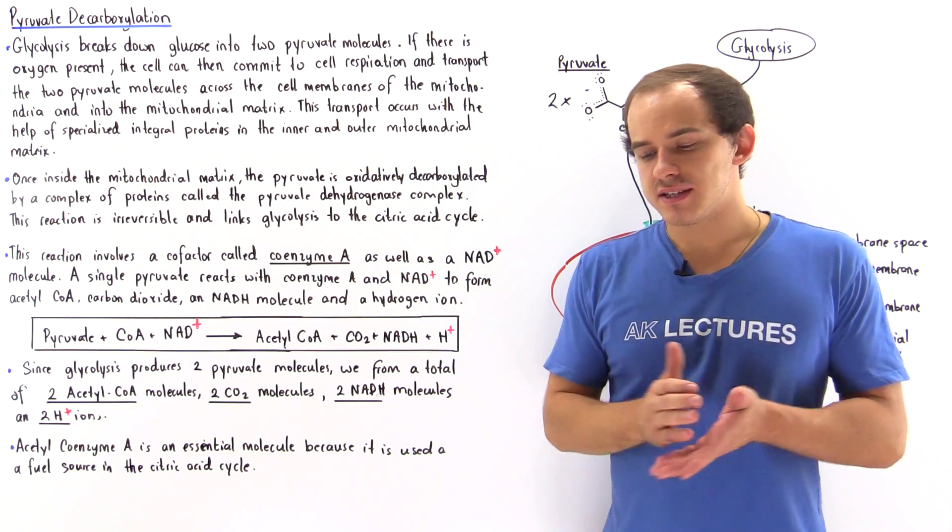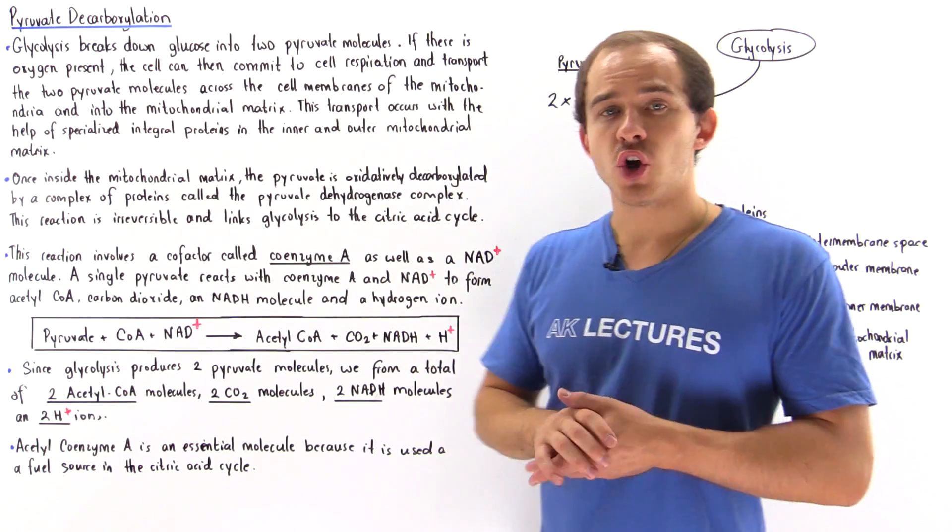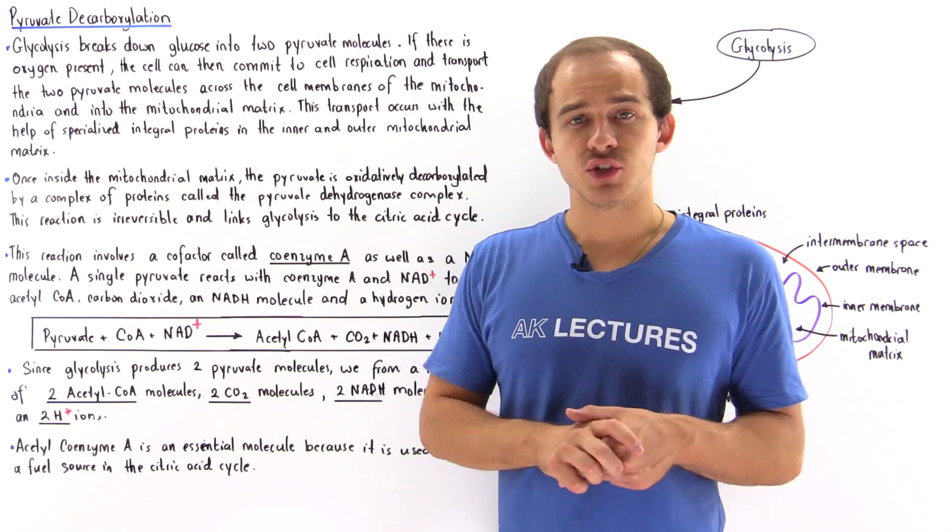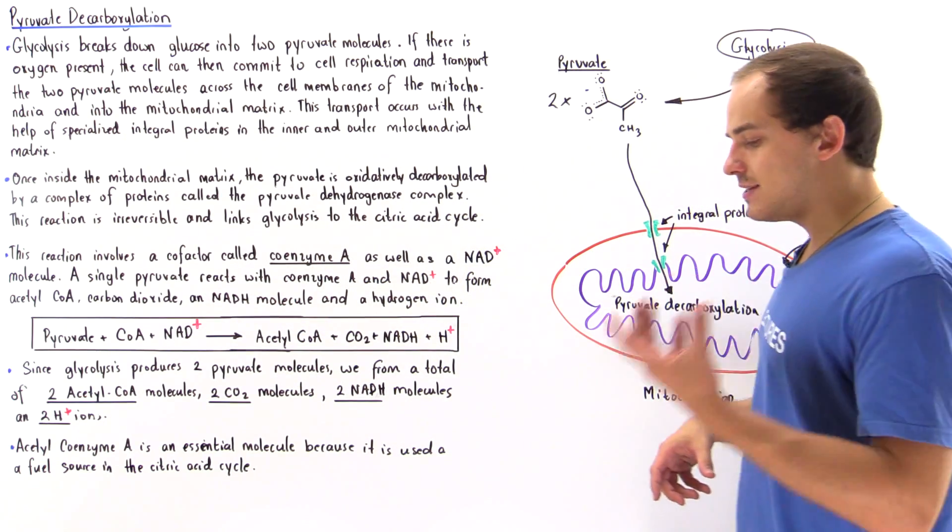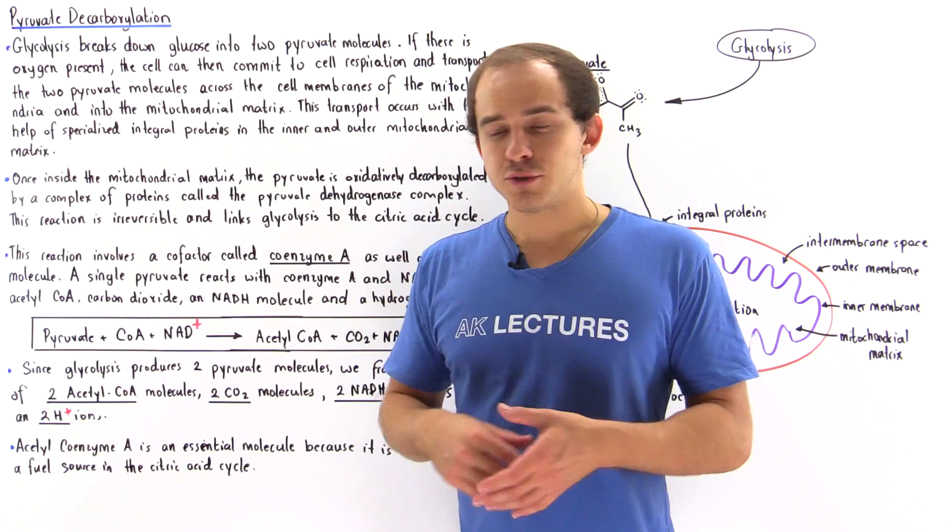Glycolysis is the process by which we transform glucose into pyruvate molecules and other types of molecules such as ATP, NADH, water, and H+ ions.